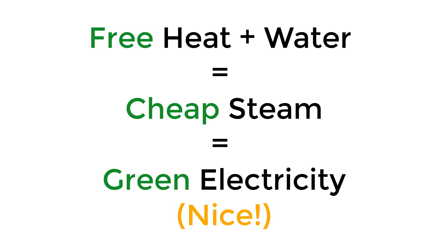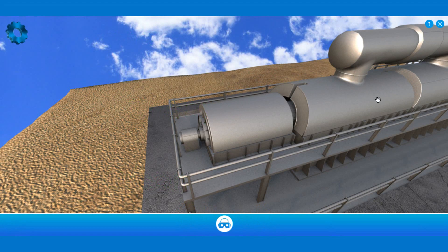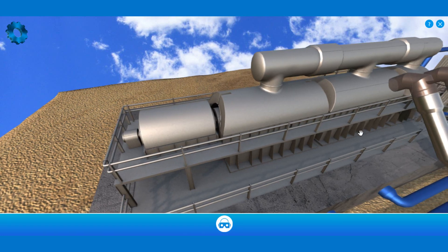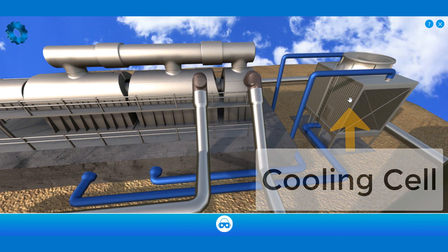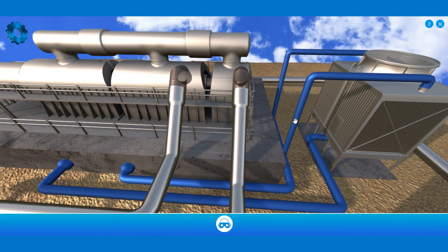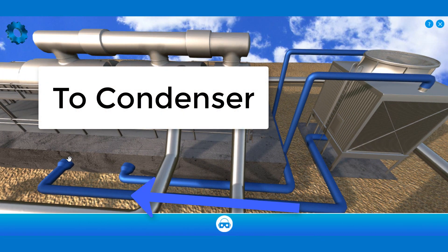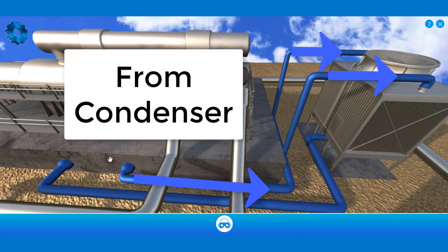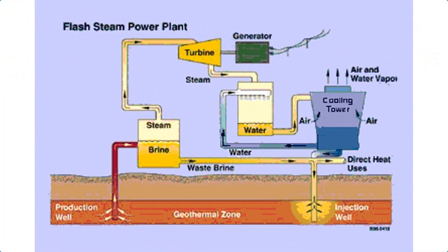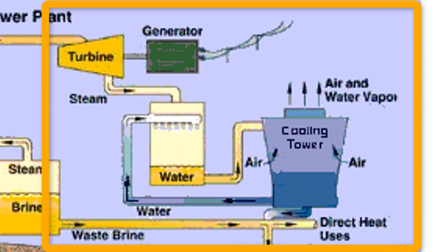So unlike a coal-fired power station, we don't need to create a fire or heat source — we just use the heat from the Earth. Now we're making electricity, and all of that steam needs to be condensed so that it can be injected back into the Earth again. What we'll use is a cooling cell. Water from the cooling cell will come out, go down into a condenser, and condense the steam we no longer need for the turbines. It'll then get rid of heat energy by being passed through the cooling cell, releasing that heat to the air, before being sent back to the condenser again.